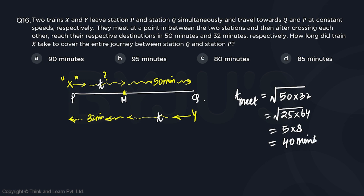So they took 40 minutes to meet each other. So train X definitely took 40 minutes to go from P to M and another 50 minutes from M to Q. So total time train X took was 90 minutes, 40 plus 50.